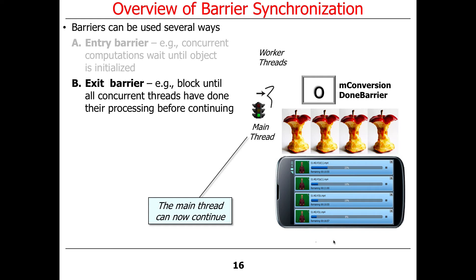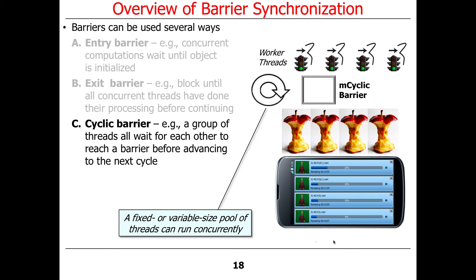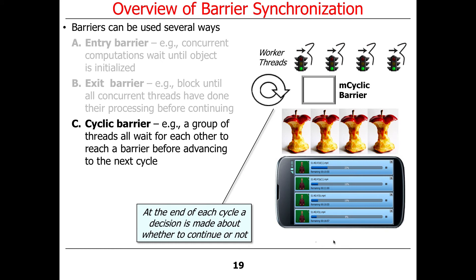That's called an exit barrier. There are also variants, one of which is called a cyclic barrier. The basic idea is you have a group of threads that all wait for each other to reach a common barrier before they can all advance to the next cycle. A good example would be a crew of workers on an assembly line who all work on a car as it moves down the line. They all wait for the car to show up, start working, and when they're done they all stop, the car moves down, the next car comes up, and they start all over again. You can have a fixed or variable-sized pool of threads, and at the end of each cycle some decision is made about whether to continue with the next cycle.